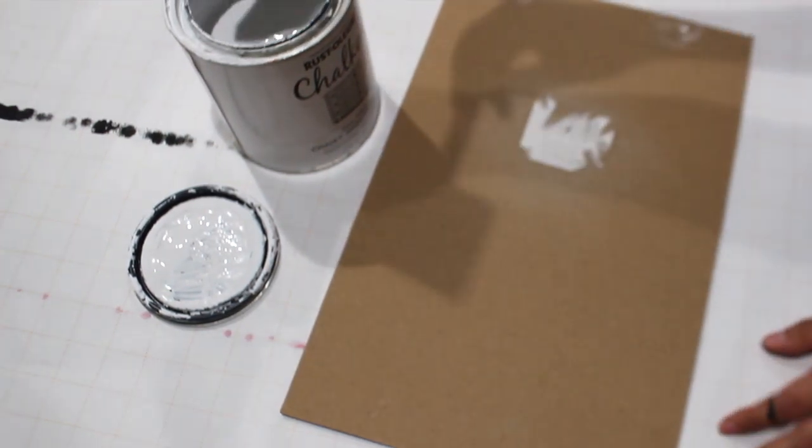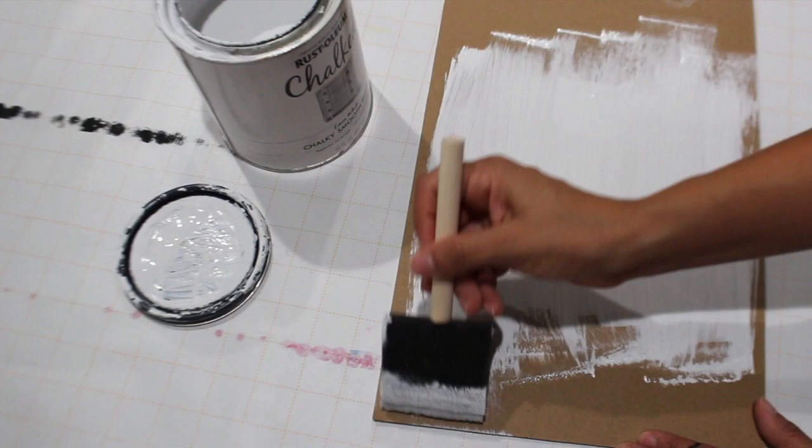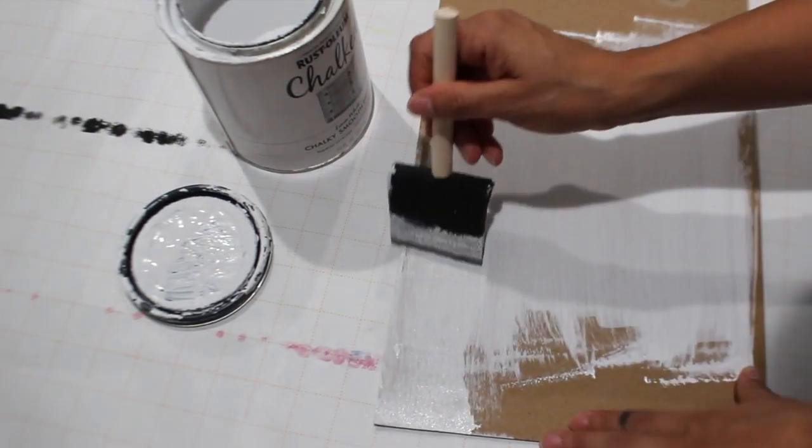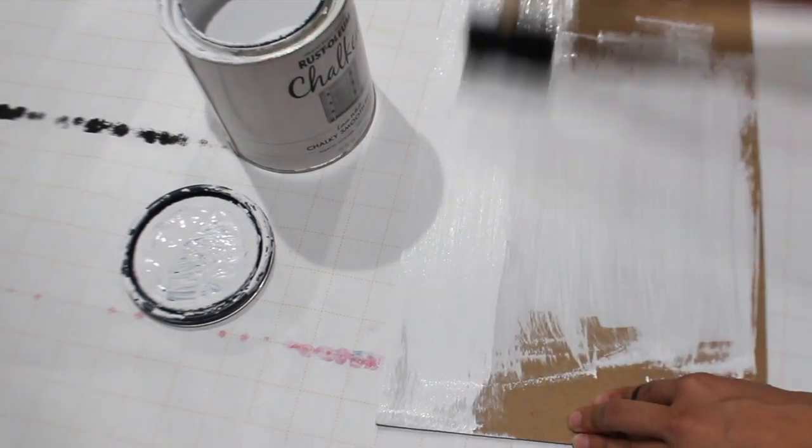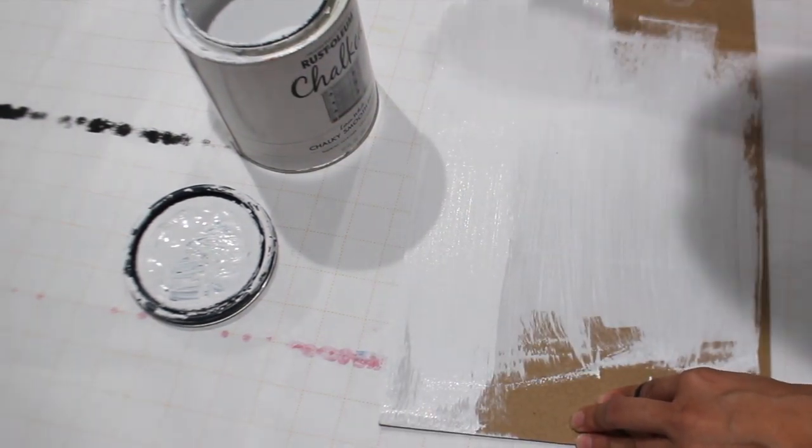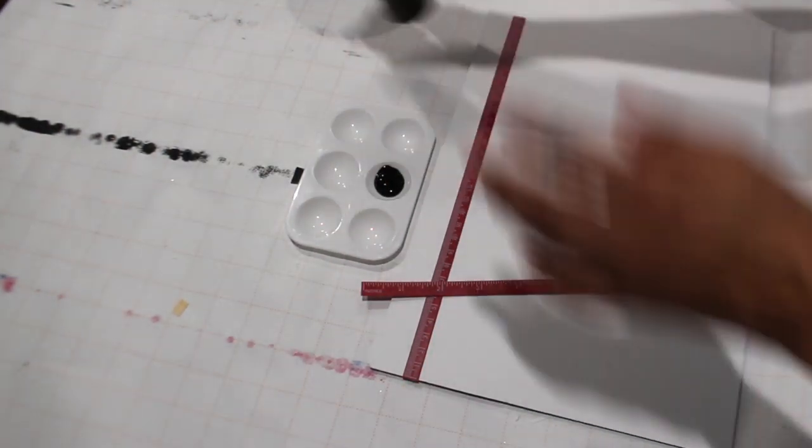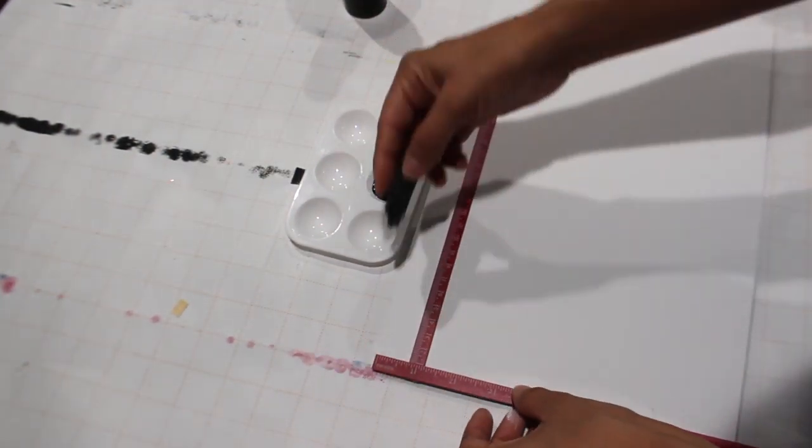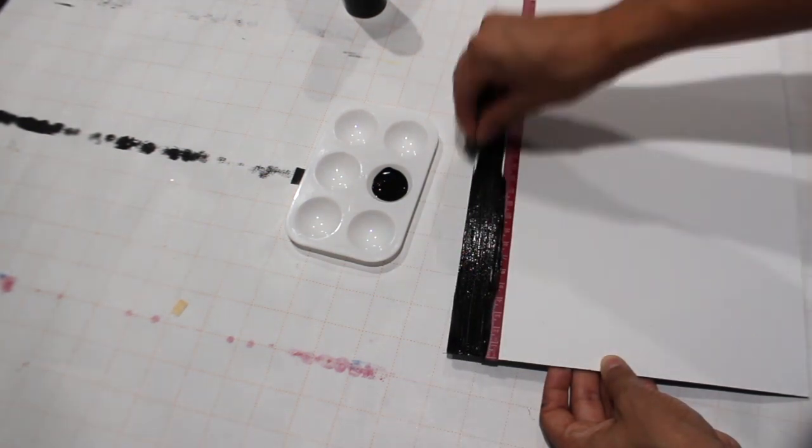So now what I'm gonna do is just cover the whole thing with my linen white chalk paint and give this thing a good two coats. So now that the two coats have dried, I'm gonna be outlining the whole sign with my jet black Apple Barrel paint.